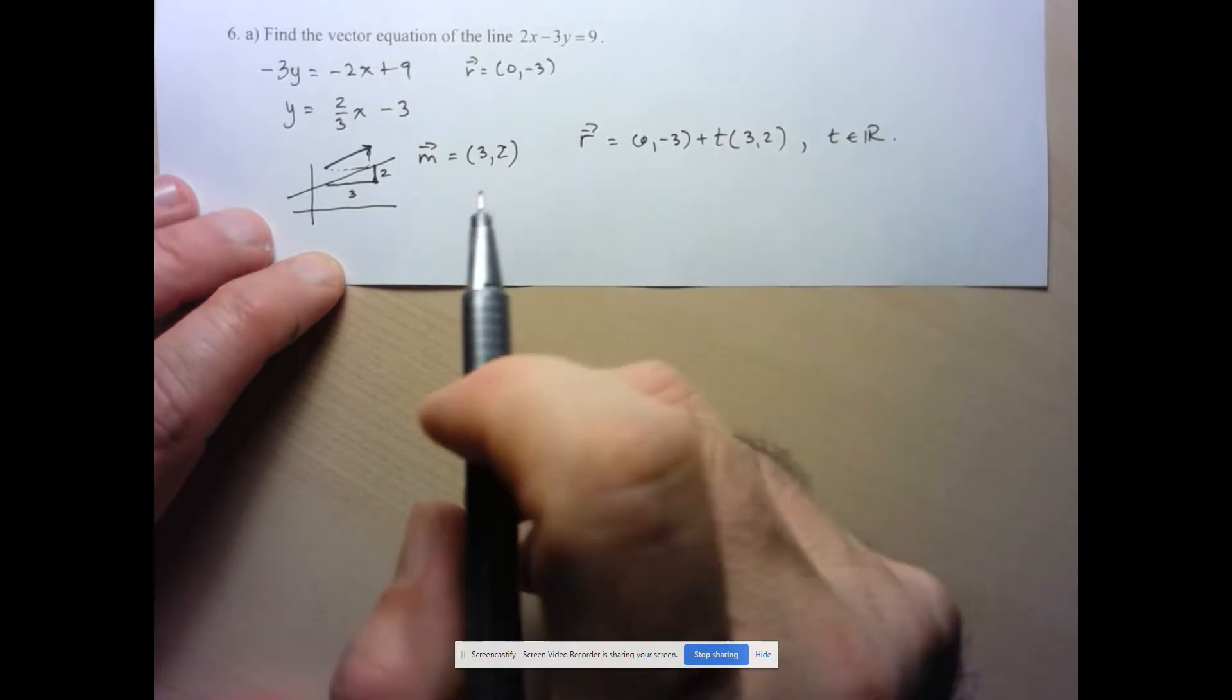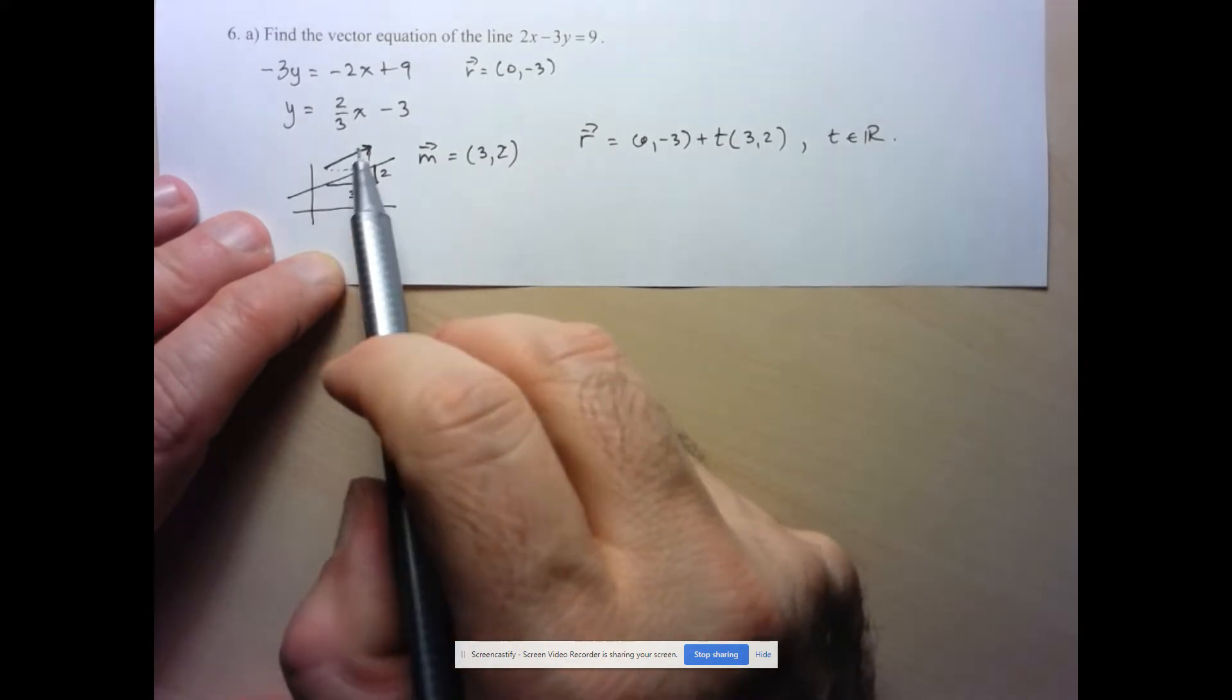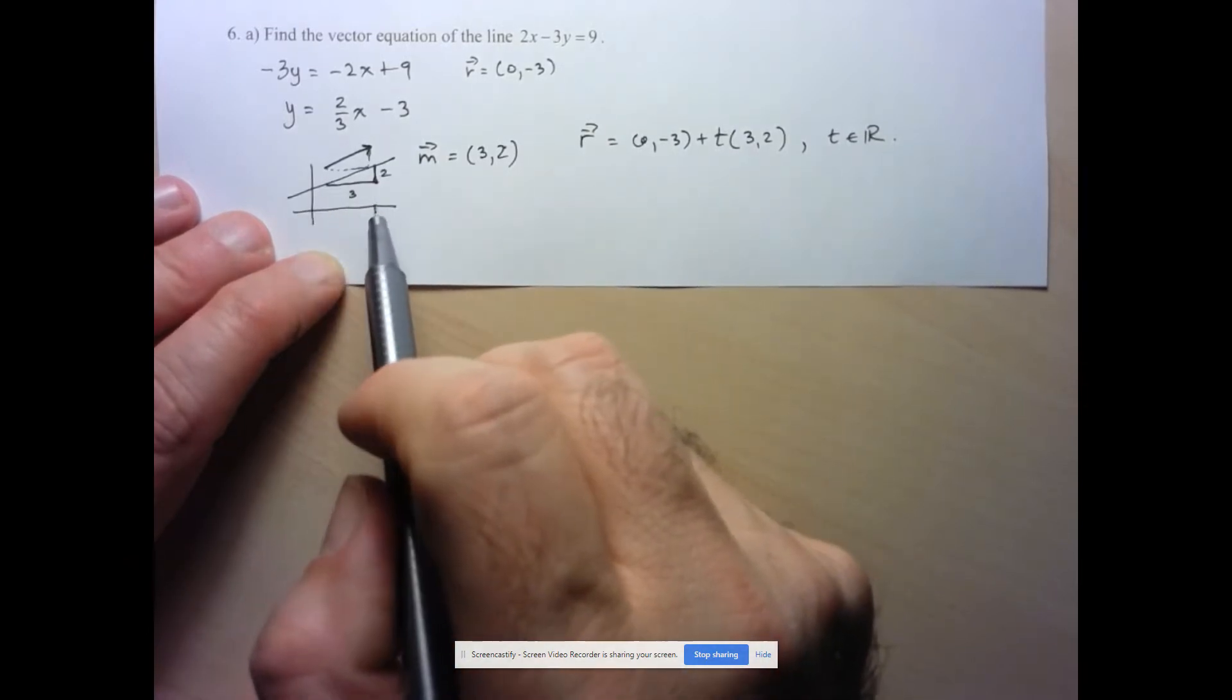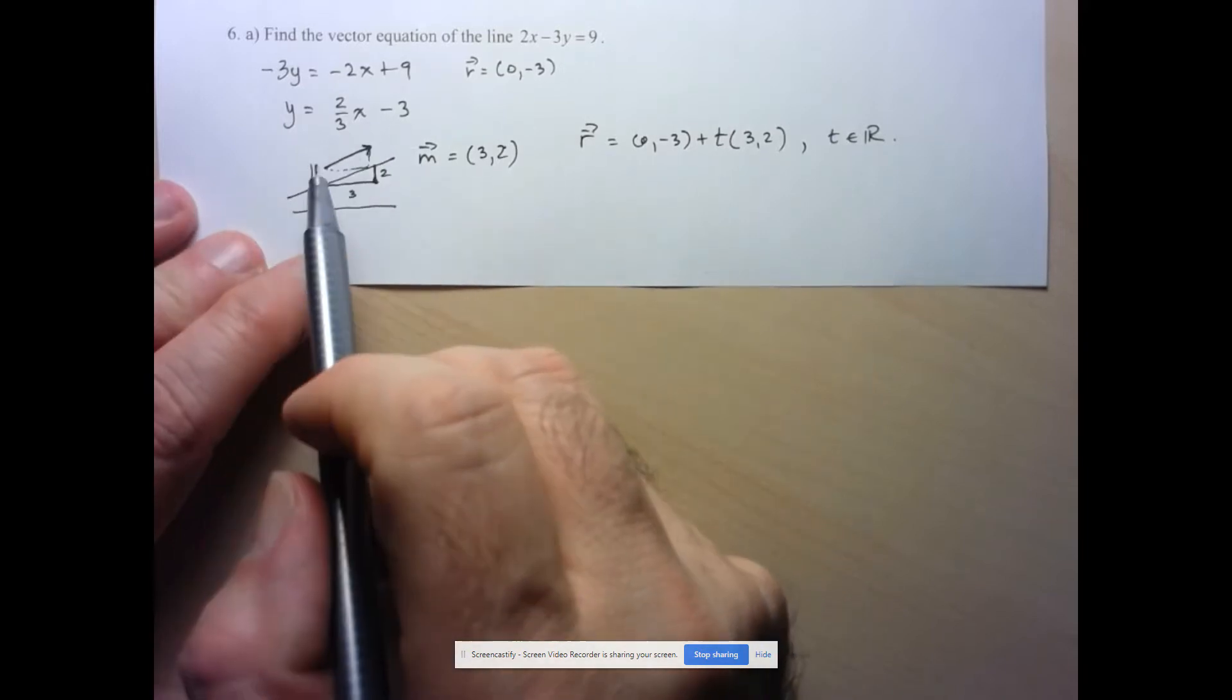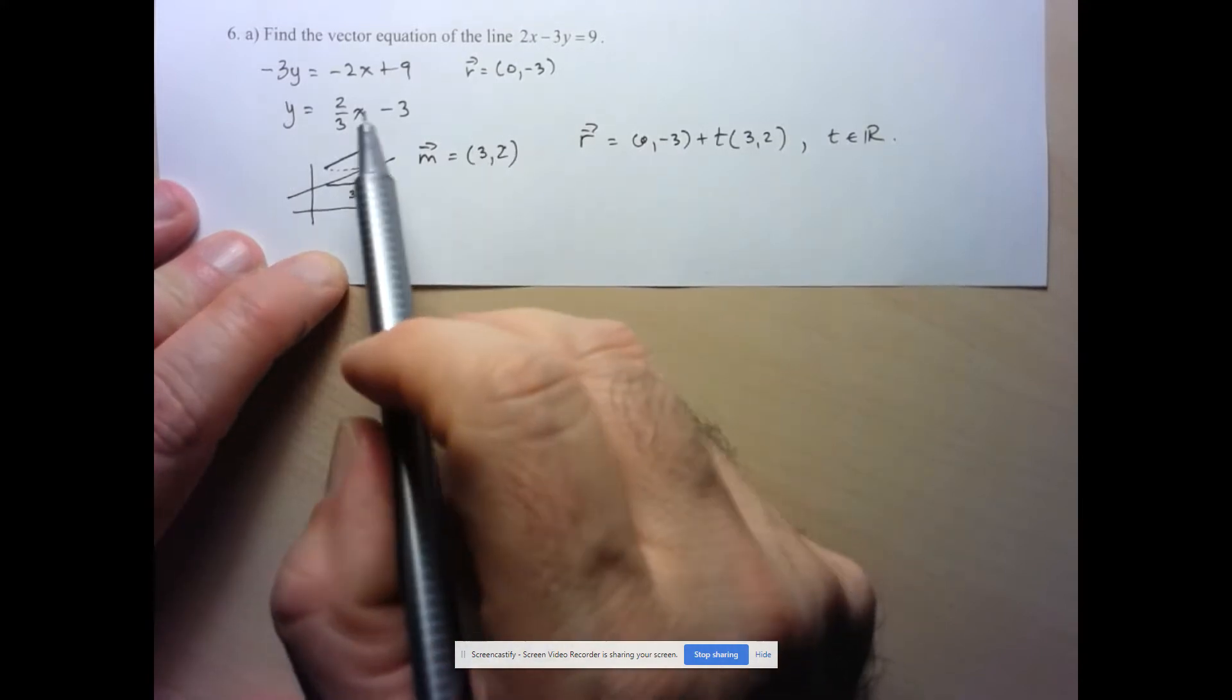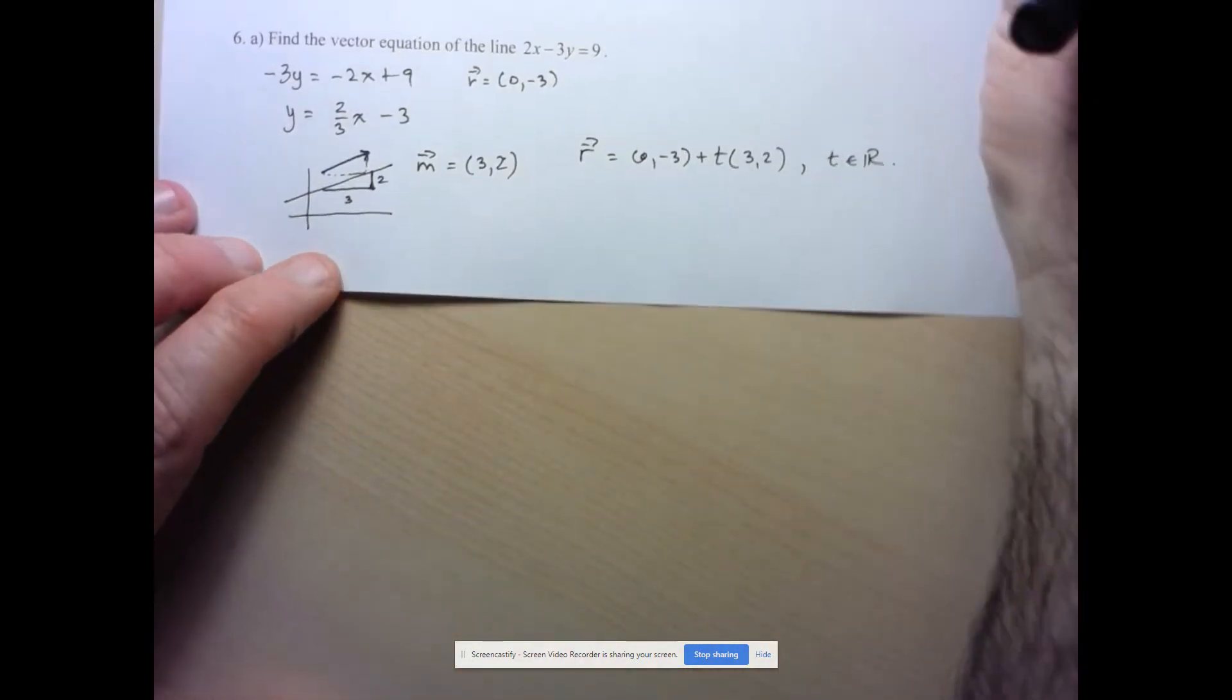Now, I could have used any vector that was parallel to this line. So I could have used the vector 6, 4. I could have used the vector negative 3, negative 2 in the opposite direction. This here was the easiest one based on using this connection to the slope. So let's move on to part B here.